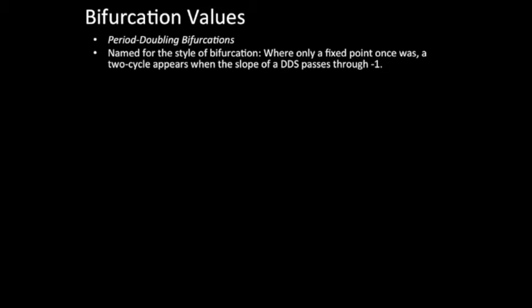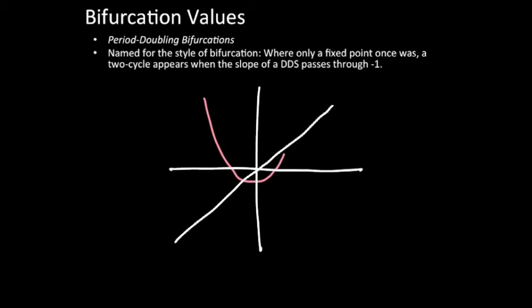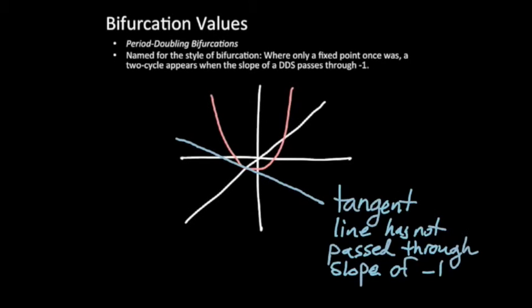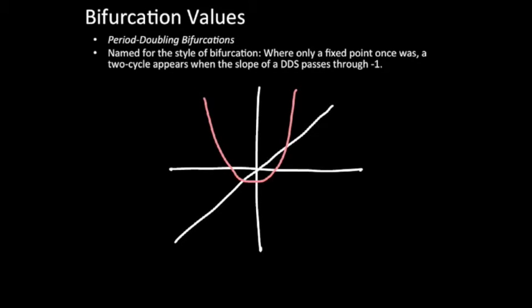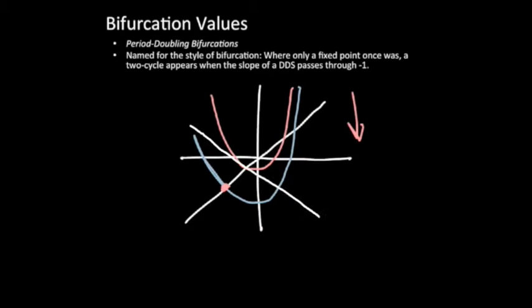So let's take a look here at what that means. This particular dynamical system doesn't pass through the y equals x line at a slope of negative one at any point, but at a certain point if we were to continue to push this parabola down, we'd get to a point where the parabola intersects with the y equals x line at a point where the slope that intersects the y equals x line is negative one.